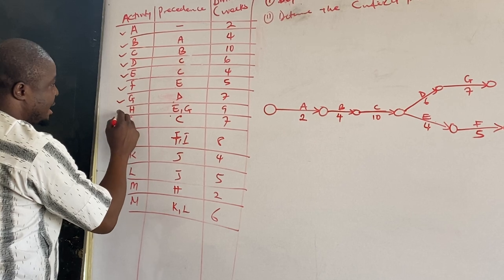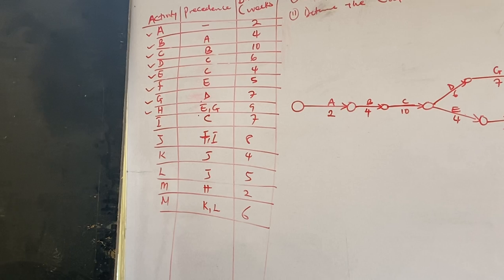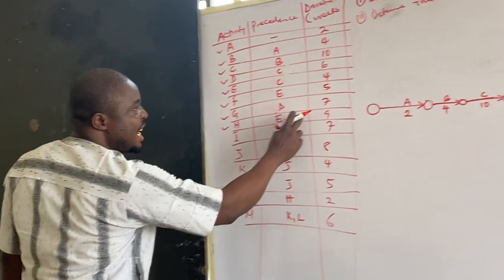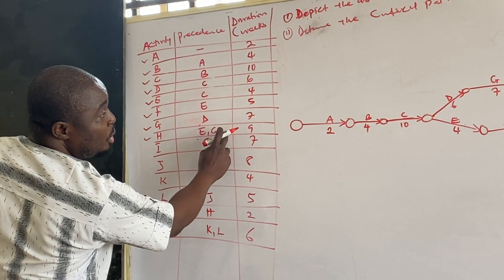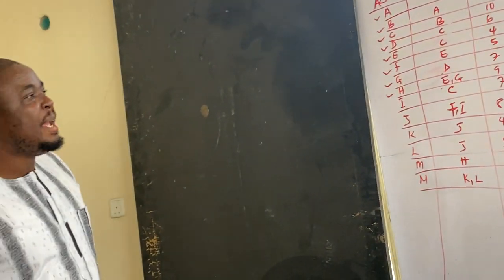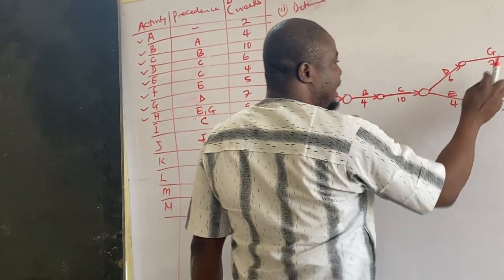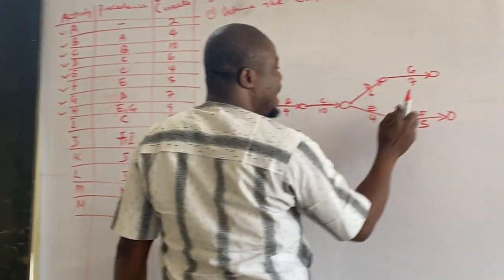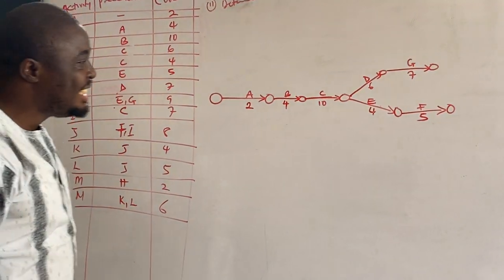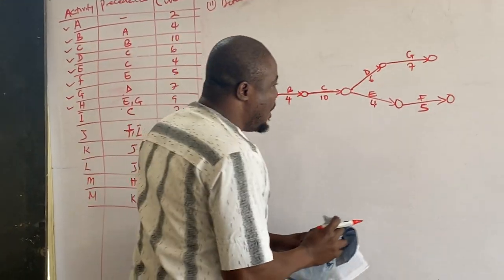H is the next one at nine. But two things will merge to form H. It means E and G are merging to form what? H. E and G must come together to form an H. If you look at it very well.